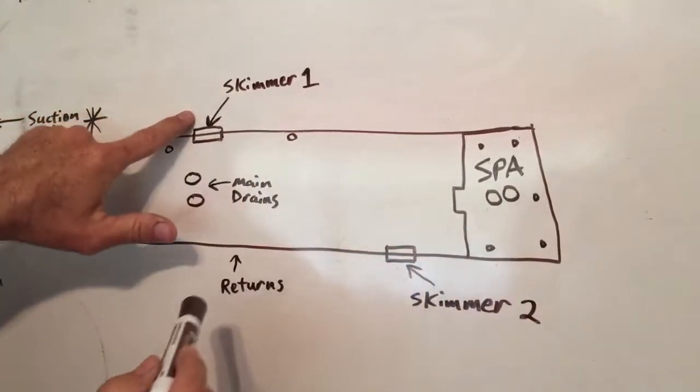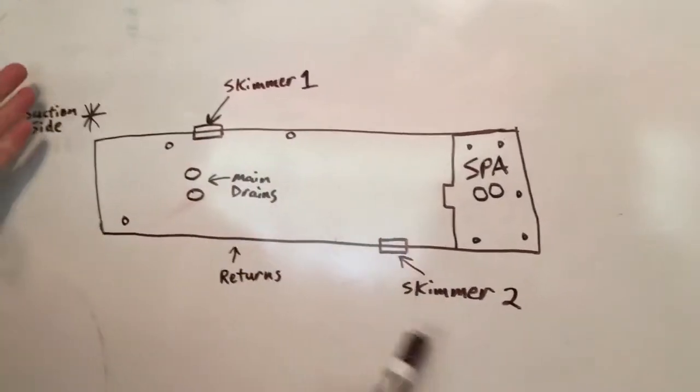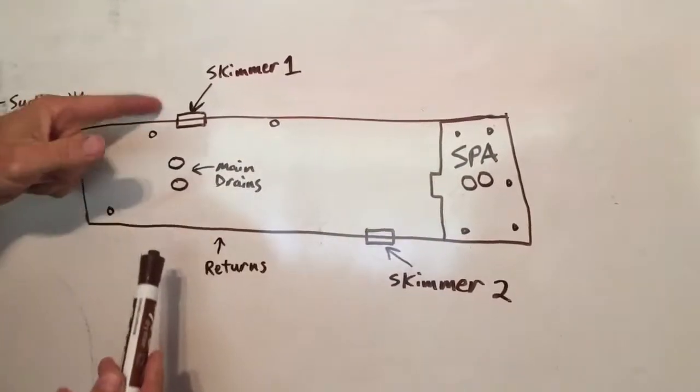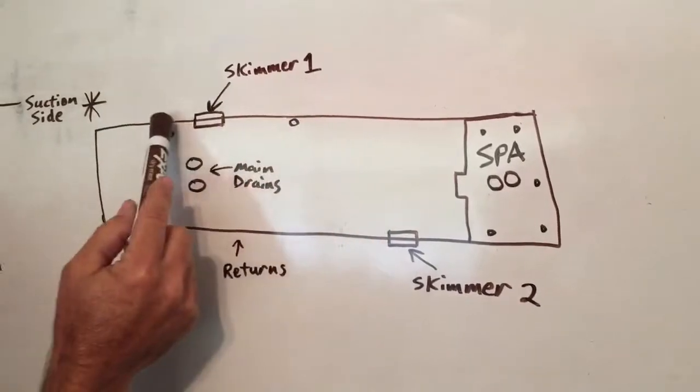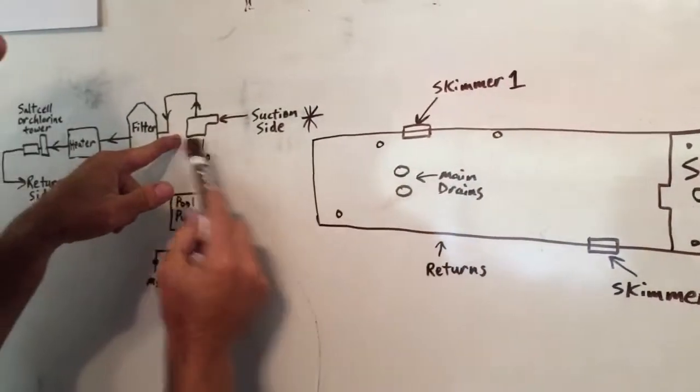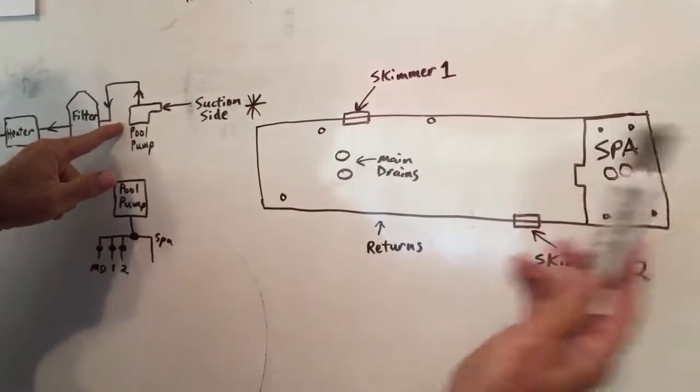So usually if you have two skimmers on the pool, it's common to have two skimmers. On smaller pools, they may only have one skimmer. Skimmer one is going to be the one that's closest to the pool equipment. Skimmer two is the one that's furthest away from the pool equipment. That's how it's usually marked.